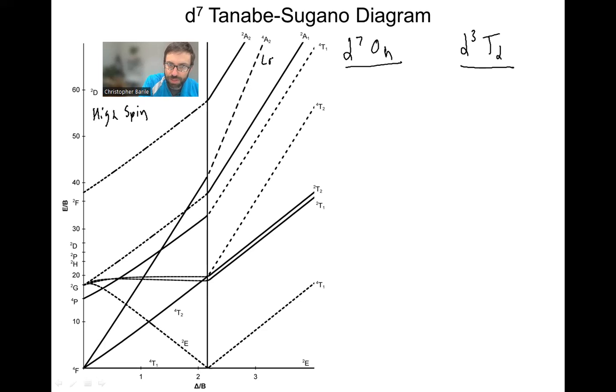And so this is the low spin side of the diagram. The low spin side of the diagram is when we have strong field ligands, things like cyanide and carbon monoxide are examples. High spin is when we have weak field ligands, things like halides and usually water.